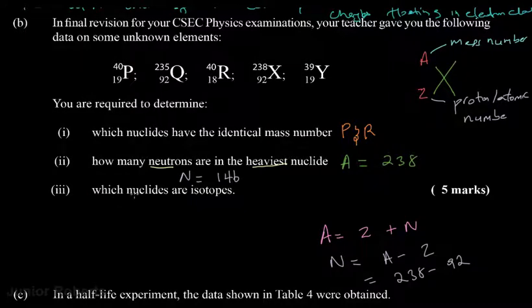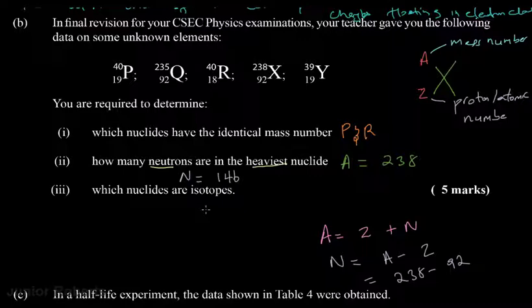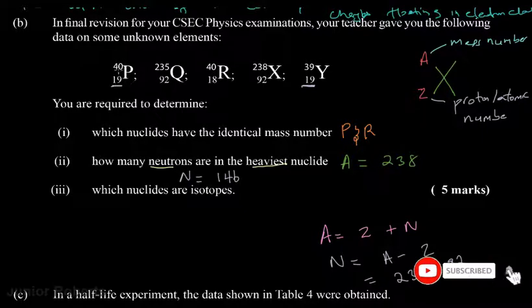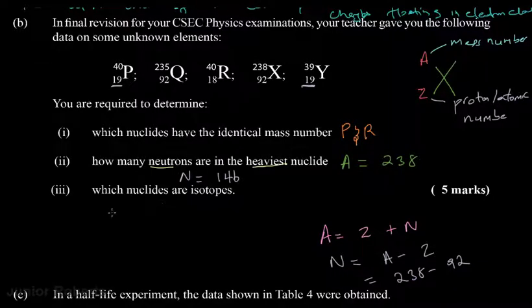The next question asks which nuclides are isotopes. Isotopes are different forms of the same element having the same atomic number but different mass number. We can see that Y and P both have an atomic number of 19 but different mass numbers, so therefore P and Y are isotopes.